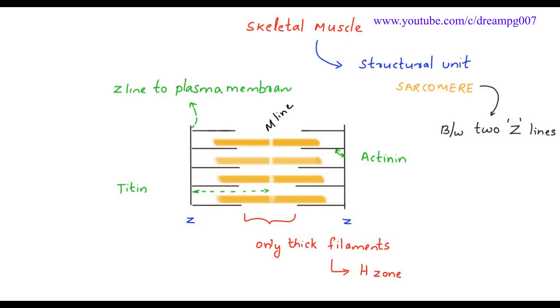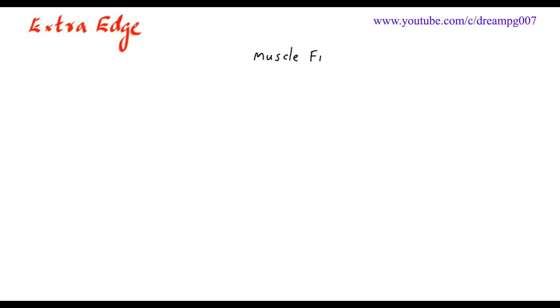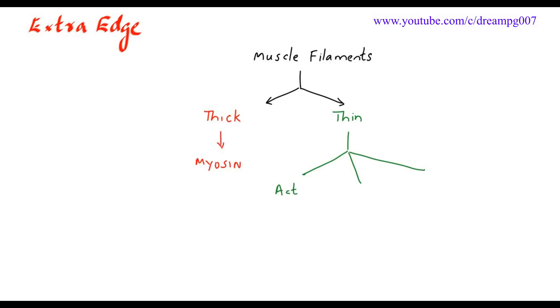The structural protein that connects the Z line to the plasma membrane is desmin. There are two types of muscle filaments: the thick filament and the thin filament. The proteins present inside the thin filament are actin, tropomyosin, and troponin.